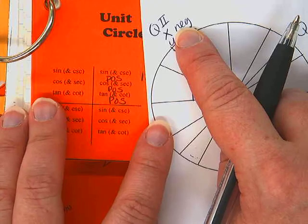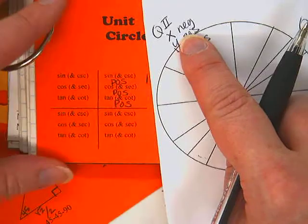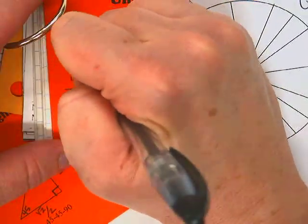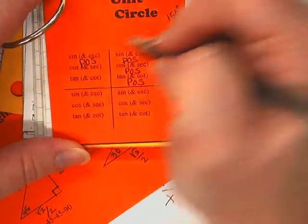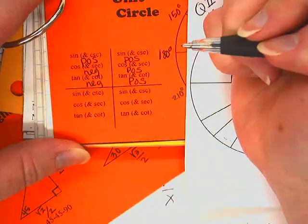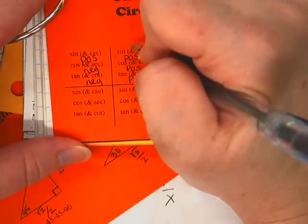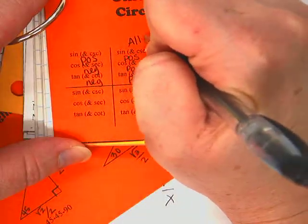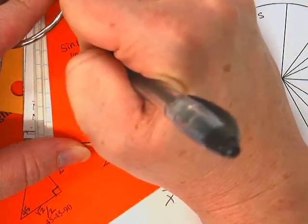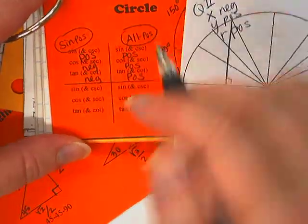Cosine uses x, what else? Tangent uses x. So what's the only thing that doesn't use x? Sine. Since sine is y over r, sine will be positive, but cosine, tangent, secant, and cotangent will all be negative. So in this quadrant, they are all positive. In this quadrant, sine is positive and everything else is negative.